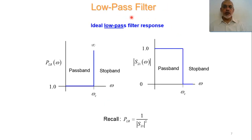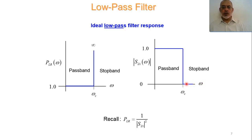As an example, for a low-pass filter, the magnitude of S21 for an ideal low-pass filter would be unity up to the cutoff frequency, meaning 100% transmission in the passband. At the cutoff frequency, the transmission coefficient goes to zero, and for Omega greater than the cutoff frequency, the transmission coefficient is zero. In terms of the Power Loss Ratio, it equals 1 in the passband and infinity in the stopband.